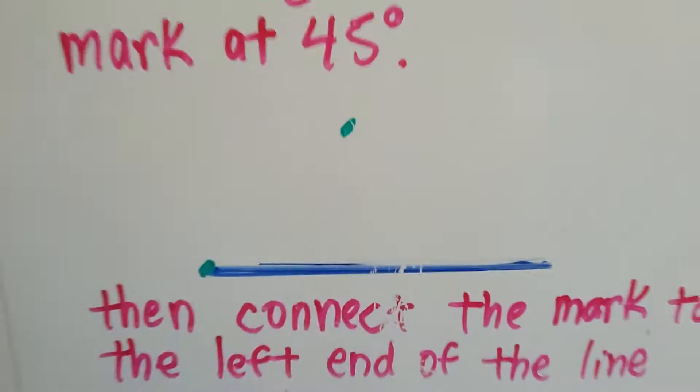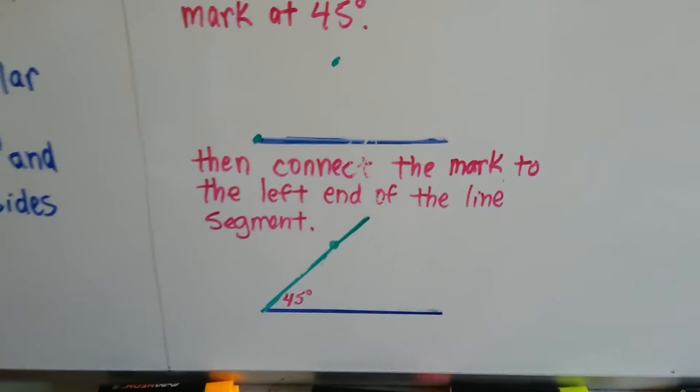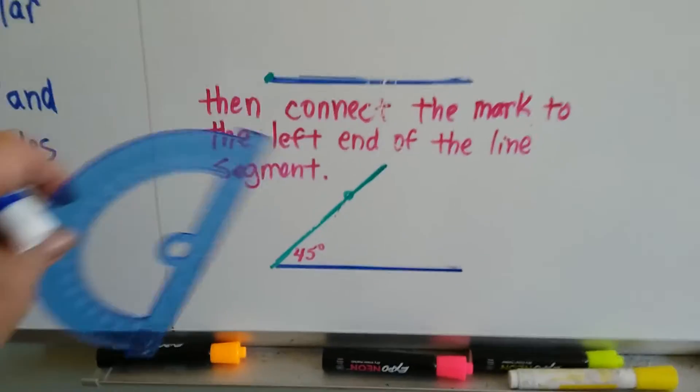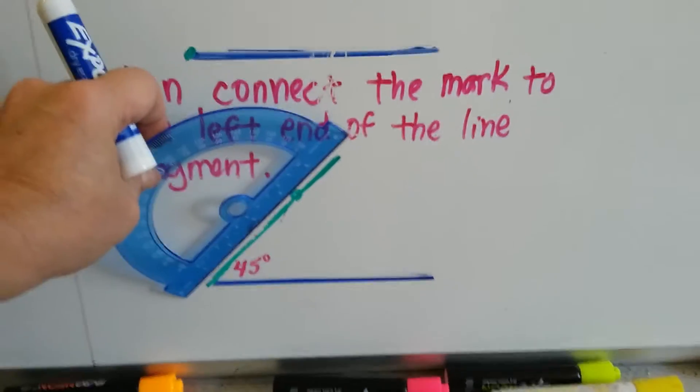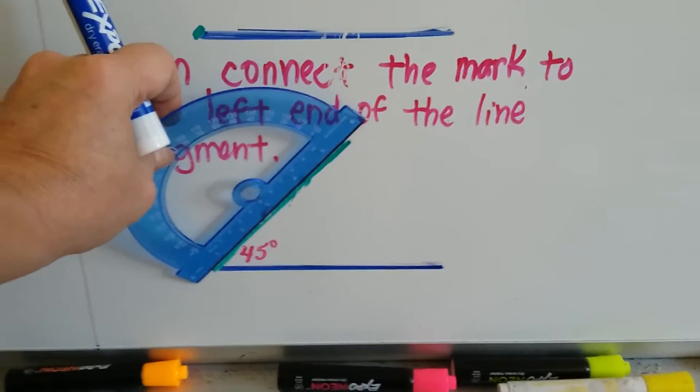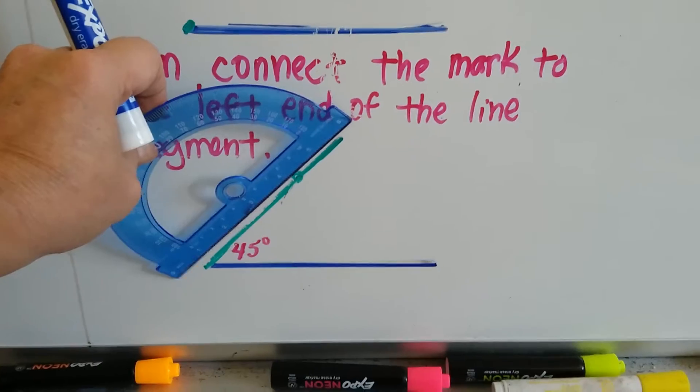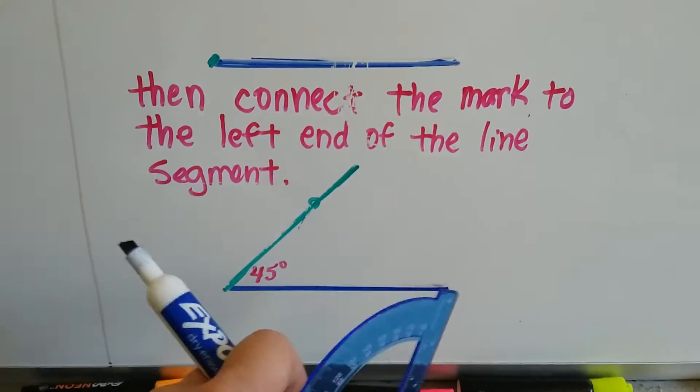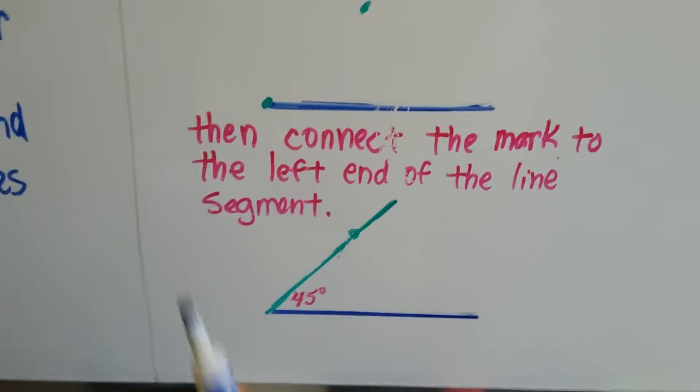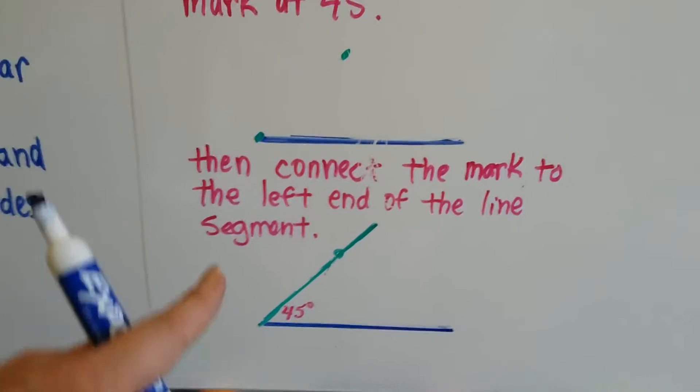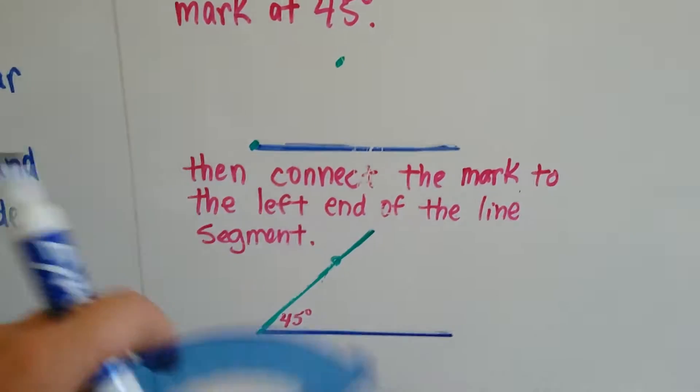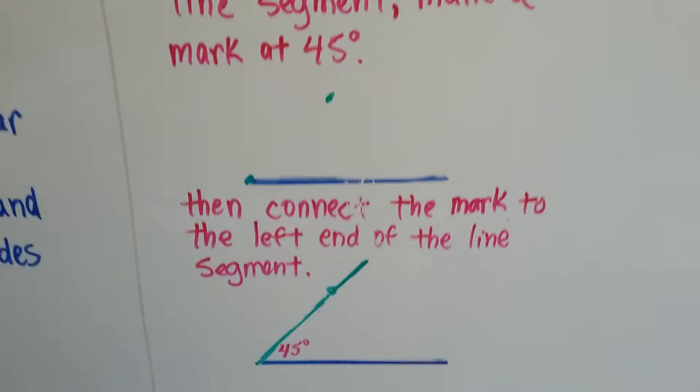I put a little green mark and now what I'm going to do is I'm going to connect that mark to the end of the line segment and draw a line with the straight edge of my protractor like that. I'm going to make it a little bit longer than it needs to be so I know whatever this one's going to be will actually cross it. So now we've made a 45-degree angle by doing that. We measured it from the end, we put the little mark, and then we connected it with a line like that.